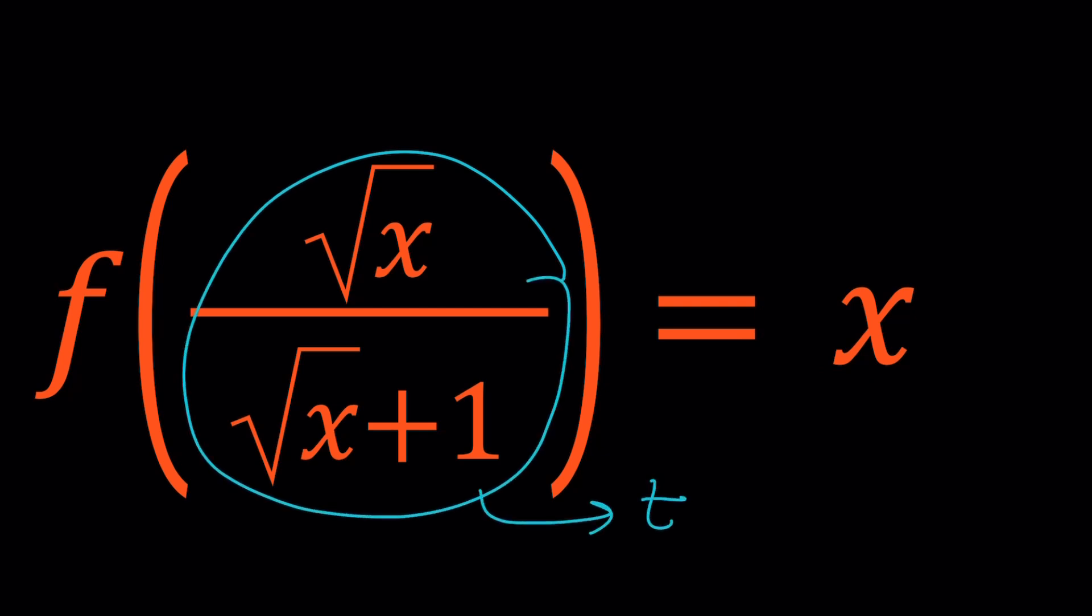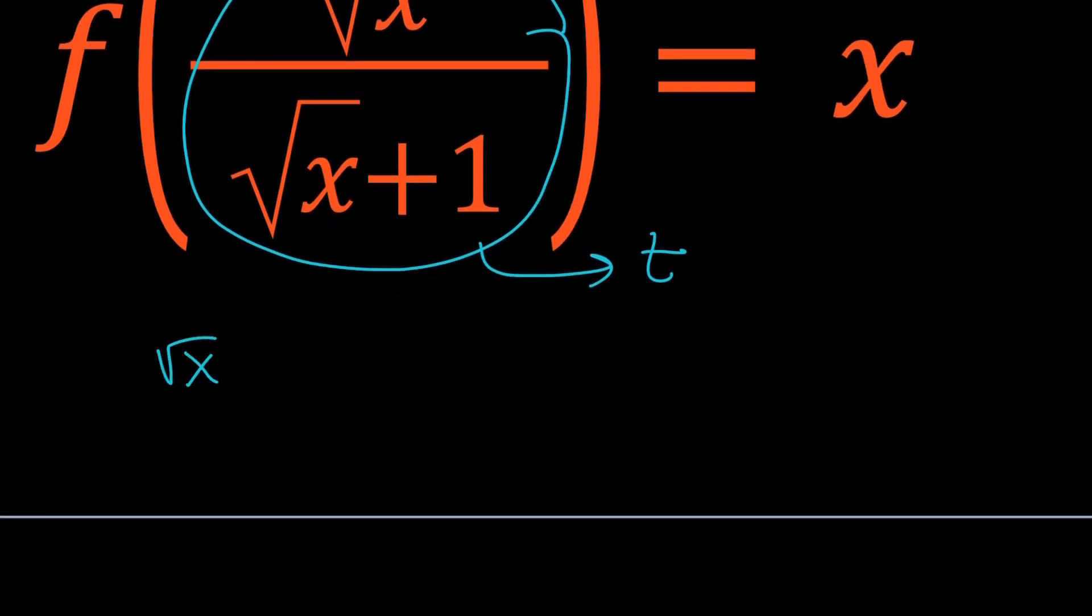So I'm going to set square root of x divided by square root of x plus 1 equal to t and then from here we get square root of x equals square root of x times t plus t.